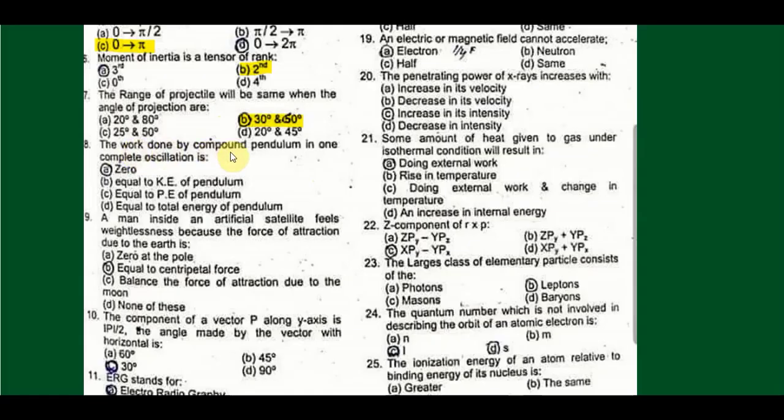The work done by compound pendulum in one complete oscillation will be zero. Because the pendulum, after one complete oscillation, will return to its initial point. And since work is a conservative force and depends on initial and final position, the pendulum, whether compound, torsional, or simple pendulum, when it returns to its initial point, displacement is zero, so work will be zero.